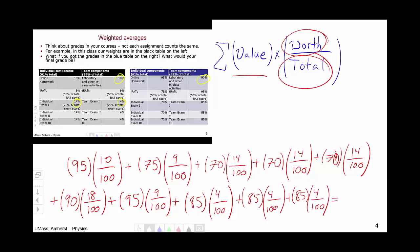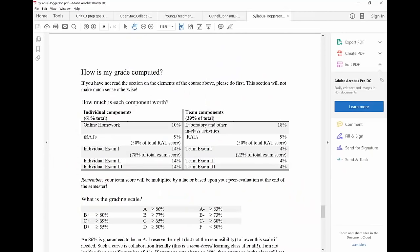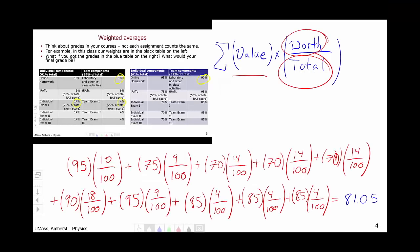Now if you compute this calculation, you get an 81.05, which if you go and look at the syllabus, is a B+. This is a weighted average of scores for the course.